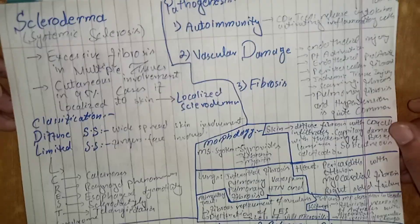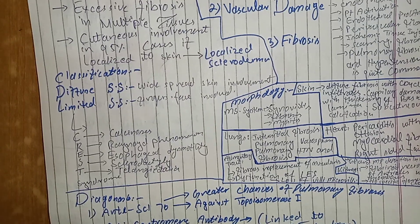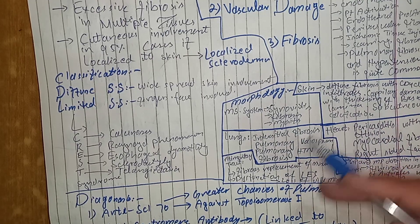And fibrosis occur in multiple body tissues. So, how this disease is diagnosed? This disease, so let's first move toward morphology.